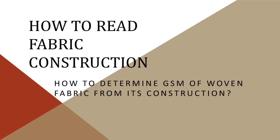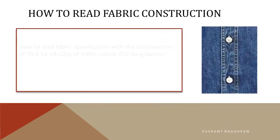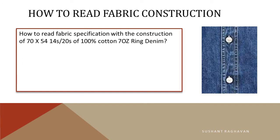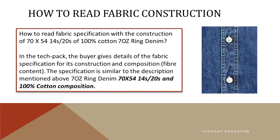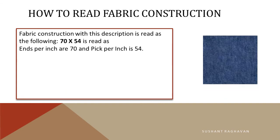How to determine GSM of woven fabric from its construction. We will rate a fabric specification with the construction of 70x54, 14x20s of 100% cotton 7 oz ring denim. In the tech pack, the buyer gives details of the fabric specification for its construction and composition fiber content. The specification is similar to the description: 7 oz ring denim, 70x54, 14x20s, and 100% cotton composition.